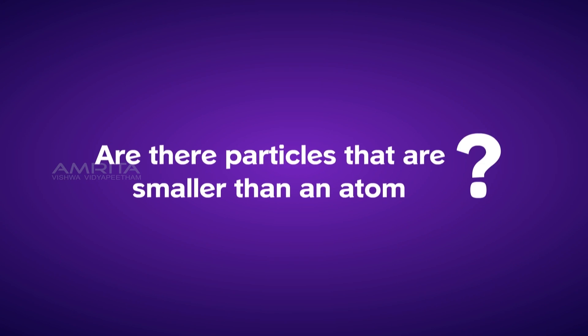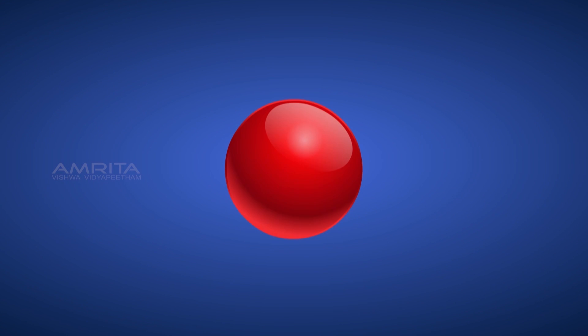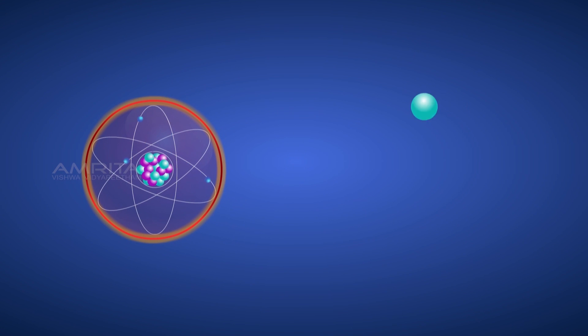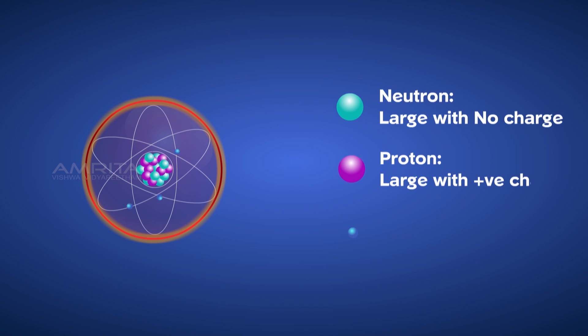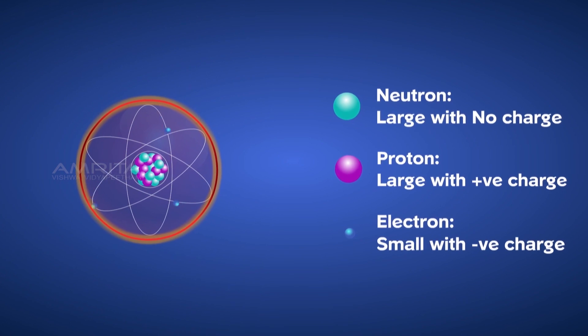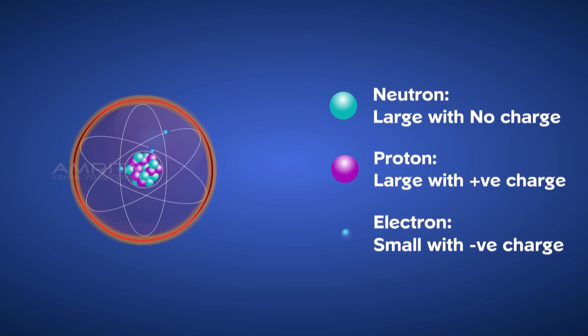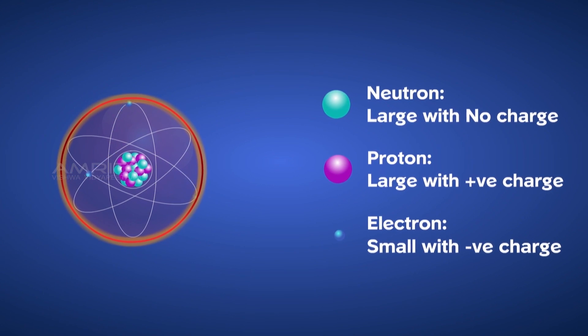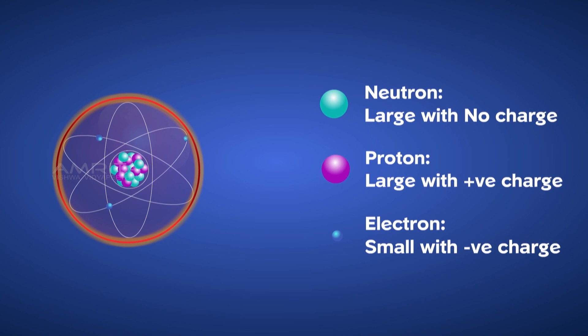Are there particles that are smaller than an atom? Sure, there are. The discovery of the fundamental particles - protons, neutrons, and electrons - inside the atom led to the failure of Dalton's atomic theory. This also proved void Democritus's and Kannada's theories that atom is indestructible.